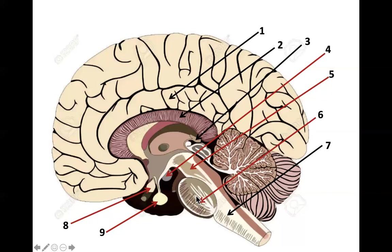Number six is the pons. The pons communicates between the forebrain and the cerebellum, and it also contains nuclei involved in sleep, respiration, swallowing, bladder control, hearing, equilibrium, taste, eye movement, sensation, motor control of the face, and posture. Number seven is the medulla oblongata, which is responsible for breathing, cardiovascular function, digestion, swallowing, sneezing, and coughing. There is some degree of overlap between all these different parts of the brain because they help each other and integrate to control all these different functions.